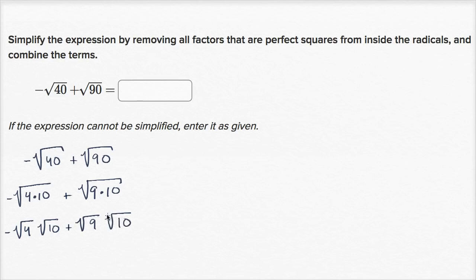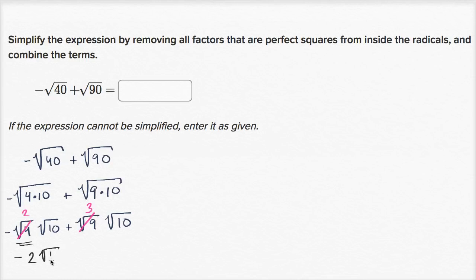And when I say square root, I'm really saying principal root, the positive square root. So it's the negative of the positive square root of 4. Let me do this in another color so it can be clear. So this right here is 2, and this right here is 3. So it's going to be equal to negative 2 square roots of 10 plus 3 square roots of 10. If I have negative 2 of something and I add 3 of that same something, that's going to be 1 square root of 10.